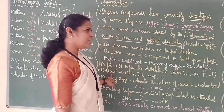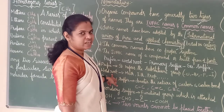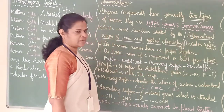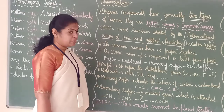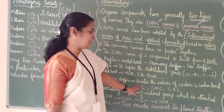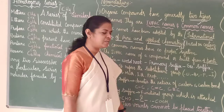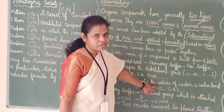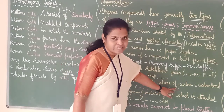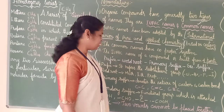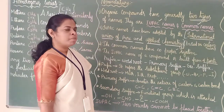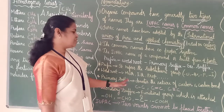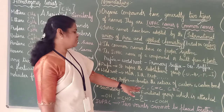What is word root? We have studied root names already — meth, eth, prop — same way it goes on till dec. Primary suffix denotes the nature of the carbon bond: single bond, double bond, triple bond. Secondary suffix is the functional group — that is what we are going to study.